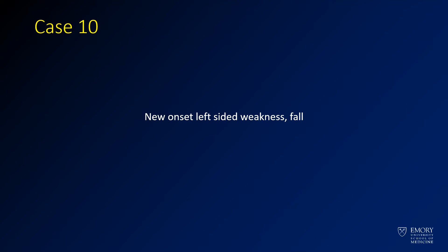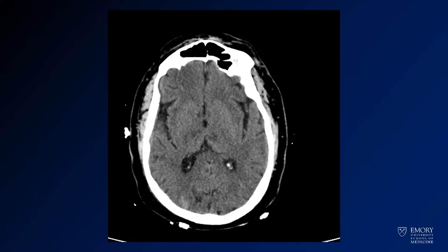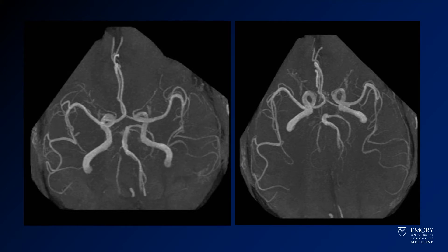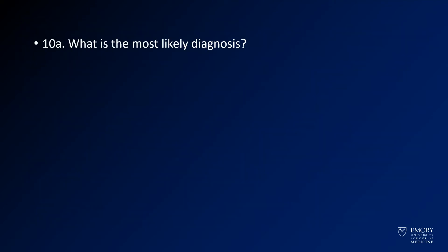For case 10, we have a patient with new onset left-sided weakness on fall. Here you see a CT image through the level of the thalamus. You have an axial FLAIR and an axial diffusion-weighted image through the same region. These are some projection images from an MRA performed at the same time as the MRI. The question is: what is the most likely diagnosis?